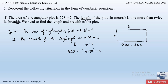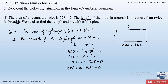Expanding the bracket: x × 1 = x, and 2x × x = 2x², so we get x + 2x² = 528. Sending 528 to the left-hand side: x + 2x² − 528 = 0. Arranging in descending order of power: 2x² + x − 528 = 0. This is a quadratic equation since the degree is 2 and the coefficient a = 2 ≠ 0. This is the required quadratic equation.